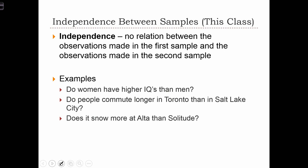In this class, we're going to deal with samples that are independent from one another. By independence, we mean there's no relation between the observations made in the first sample and the observations in the second sample. With this kind of independence, we can ask questions like whether women have higher IQs than men, whether people in Toronto commute longer than those in Salt Lake City, or whether it snows more in Alta compared to Solitude.